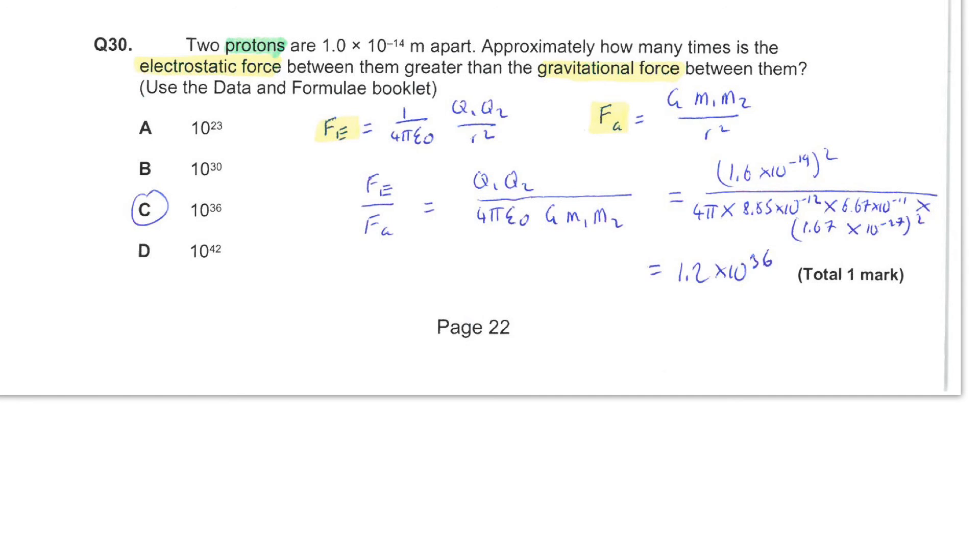So then substituting in values from the datasheet gives you all of these numbers, and just careful use of the calculator leads to a value of 1.2 times 10 to the 36.